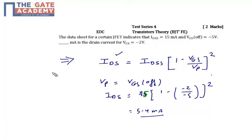The value of V_GS is minus 2, V_P is minus 5. If you put all these values and solve it, you can get the value of I_DS as 5.4 mA.